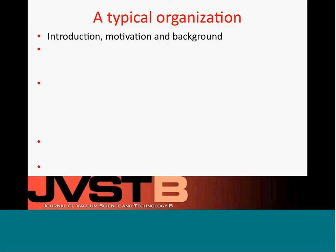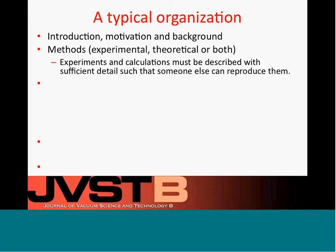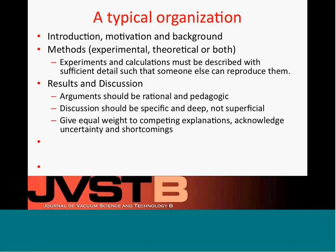A typical organization of an article starts with an introduction, motivation, and background — very important that it sets the stage. It's typically followed by methods used in the research, which could be experimental, theoretical, or both. Experiments and calculations must be described with sufficient detail such that someone else can reproduce them. This is typically followed by results and discussion, where you present what you found, discuss interpretation of your experiments, and make your point. Arguments should be rational and pedagogic. Discussion should be specific and deep, not superficial. If there's uncertainty or shortcomings of the experiments or findings, this is where to point these out. Give equal weight to competing explanations, acknowledge uncertainty and shortcomings.